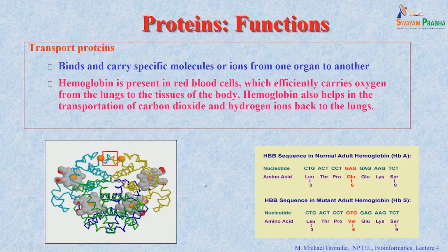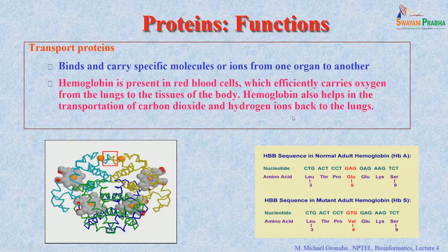Next we talk about transport proteins. This is a very famous and important protein that everybody needs. The protein involved in oxygen transport is hemoglobin. Hemoglobin is present in red blood cells, which efficiently carries oxygen from the lungs to the tissues of the body. Hemoglobin also helps in the transportation of carbon dioxide and hydrogen ions back to the lungs.